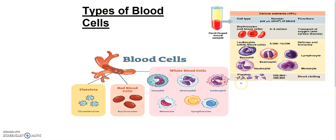They help in blood clotting and have colorless cytoplasm with distinct granules. If we talk about their life span — platelets' life span is 6 to 8 days. And they are formed from a fragment of large bone marrow cells.